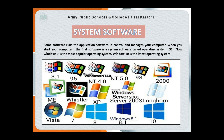When you start your computer, the first software is a system software called the Operating System — we can call it OS for short. Windows 7 is the most popular operating system, and you can use it at your school or at home. Windows 10 is the latest operating system. These are all the Windows versions we can use throughout the years, beginning with 3.1, and our latest is Windows 10.